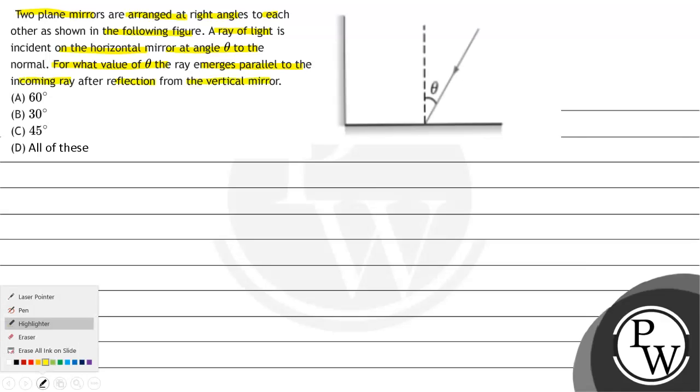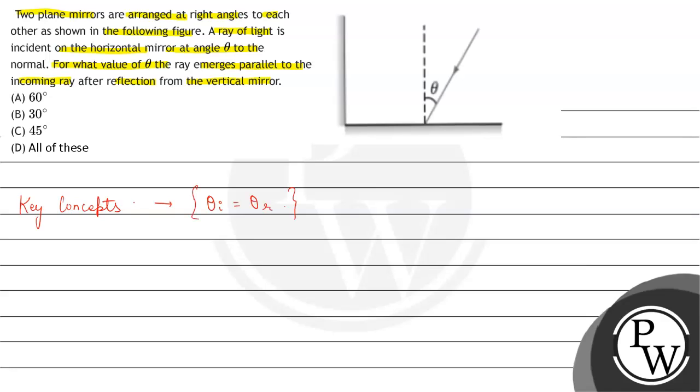To understand the question, let us first revise the key concepts on which the question is based. The key concepts behind this question are, first is law of reflection, which says that angle of incidence theta i is equal to angle of reflection theta r.